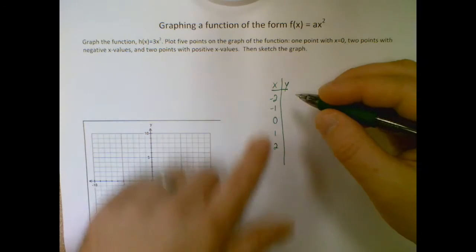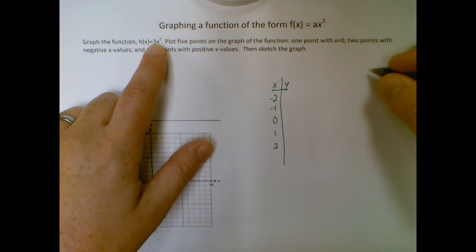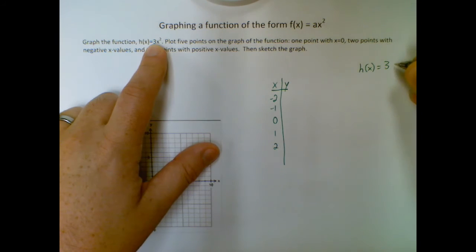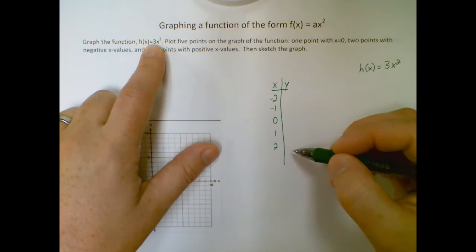Then I'm going to take those and plug them in to my function here of h of x equals 3x squared, and by doing that I can actually find the y values which I'm going to need.